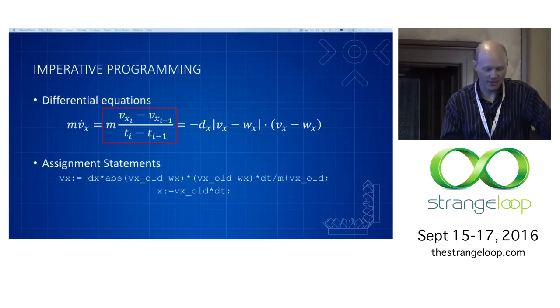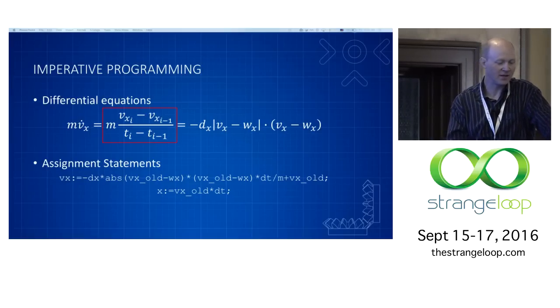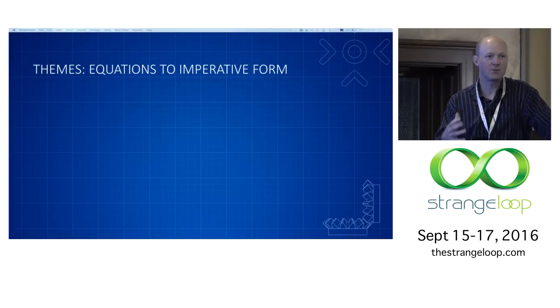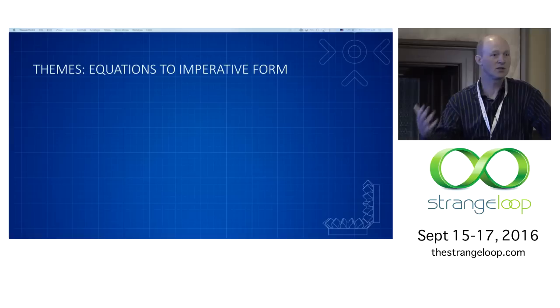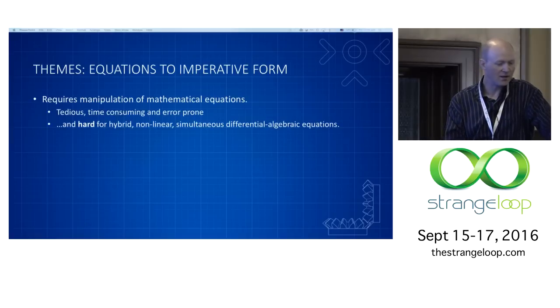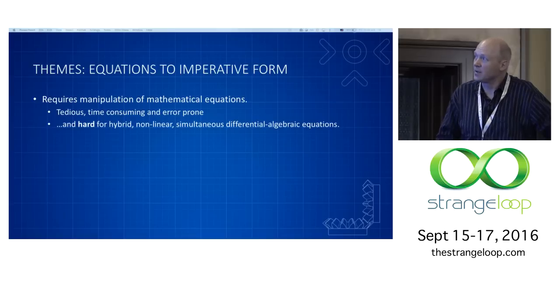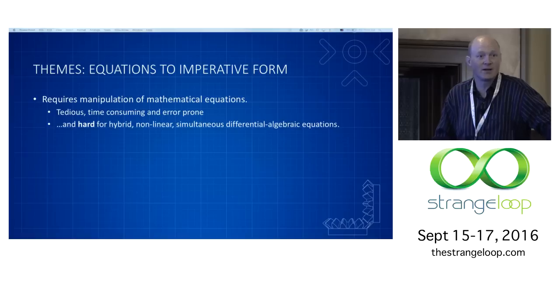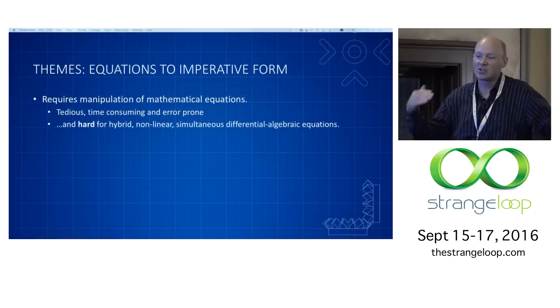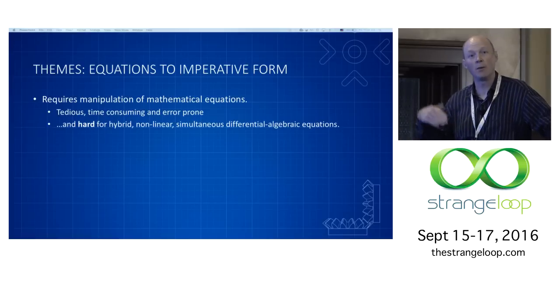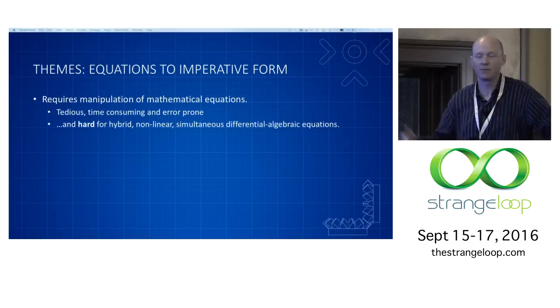So you can do it. I think the mapping is kind of straightforward there. But there are going to be some themes that emerge as you try and do this over and over again. One of them is the manipulation required. The first thing to note about that manipulation is that it's tedious, time-consuming, and error-prone. And one of the reasons we developed ENIAC in the first place was to avoid a lot of tedious, time-consuming, error-prone stuff.